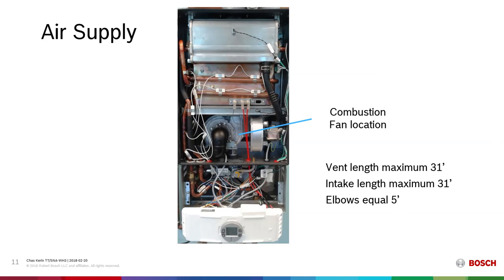Air supply is the third component of the combustion triangle. If we don't have air, we don't have oxygen. The combustion fan — note the location — is providing that air intake and delivering the fuel. The ECU, the control unit, is aware of the fan speed via a sensor on the fan. Should the fan not be working, that will provide an error code other than EA. The combustion fan has a maximum power allowing it to push exhaust a maximum of 31 feet and draw fresh air in a maximum of 31 feet. Every elbow in the venting or intake system reduces that by 5 feet.